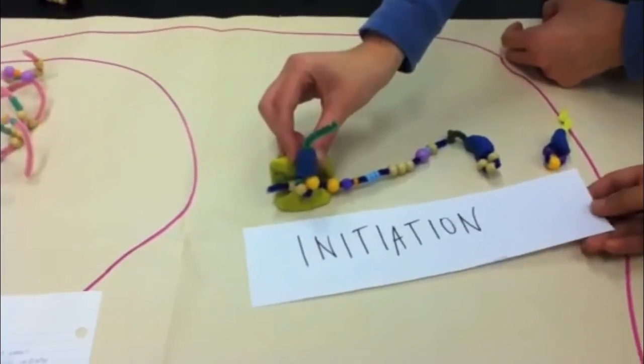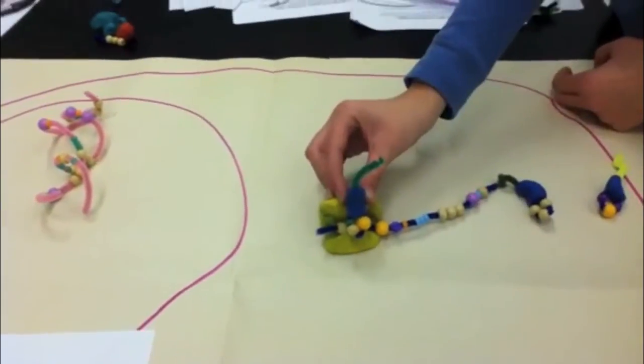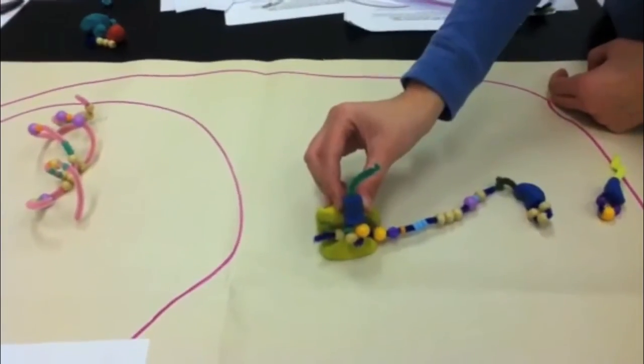In the large ribosomal unit, there are three sites: the A site, P site, and E site. The tRNA with the polypeptide chain sits in the P site.